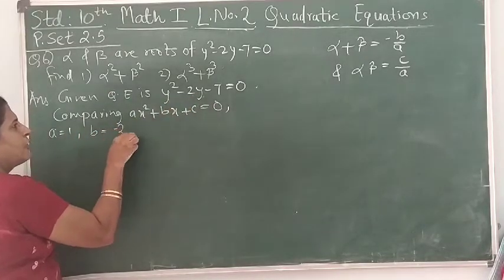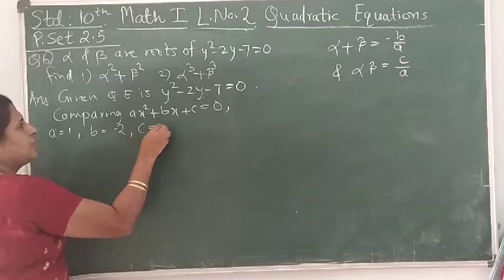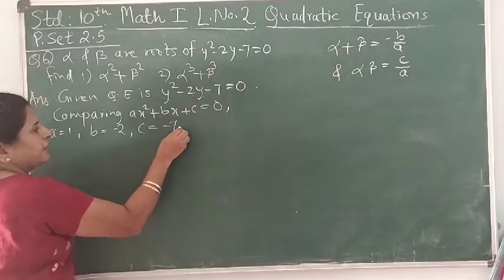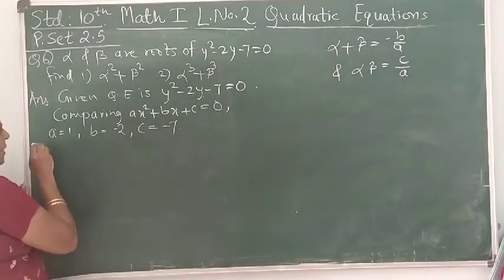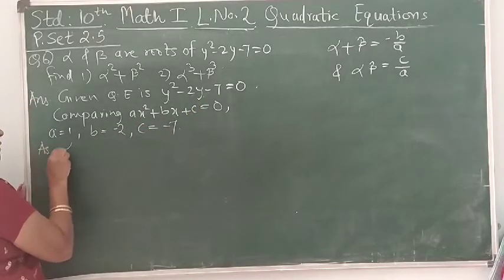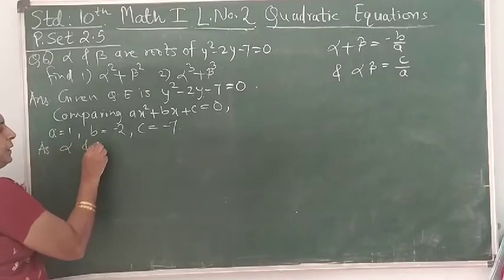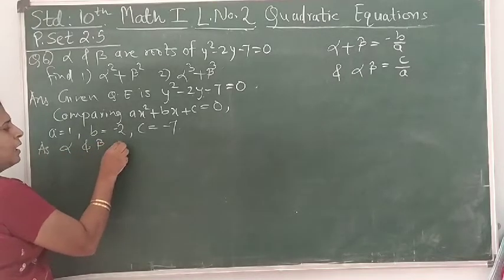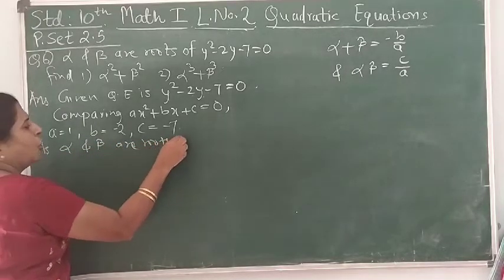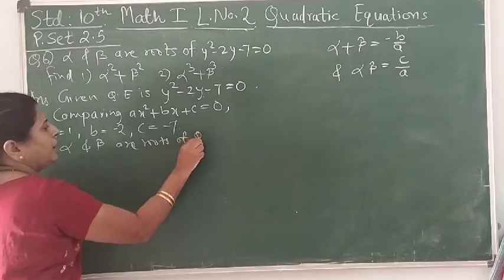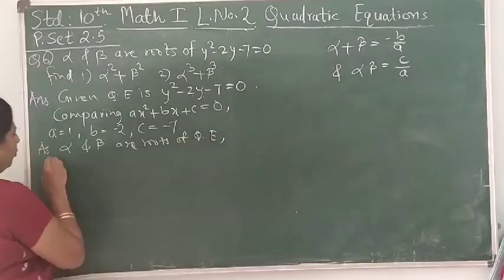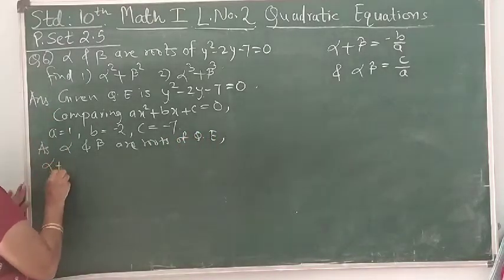The value of c is the constant term, which is -7. Now, as alpha and beta are roots of the quadratic equation, we know that α + β = -b/a and α × β = c/a.